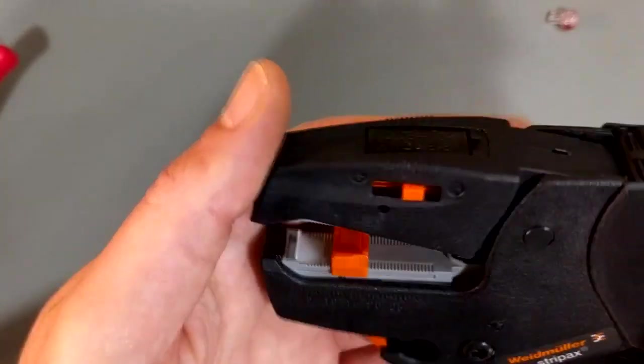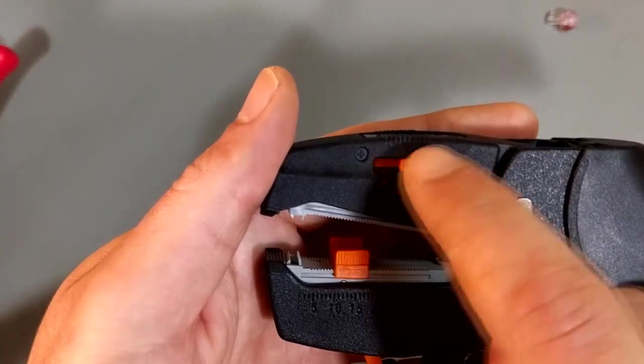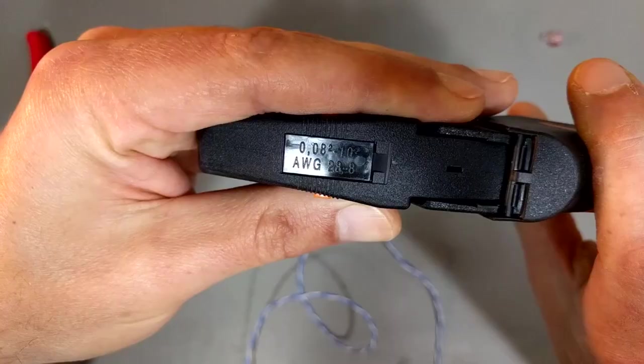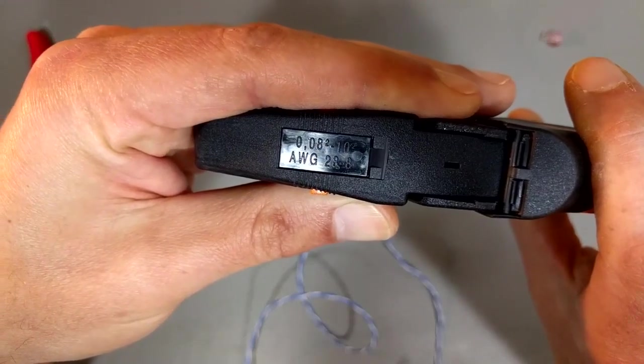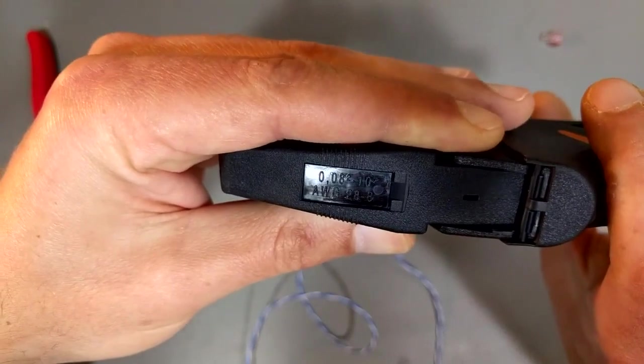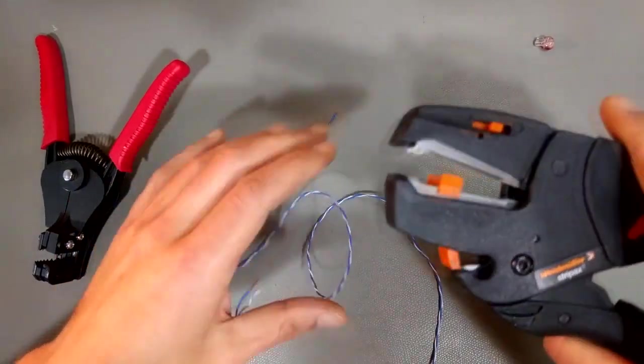Well I call it the tension adjuster, but you have to set your depth here and then you move this guy back and forth. And this one will do wires as small as 0.08 square millimeters, so it will do very very thin wires.